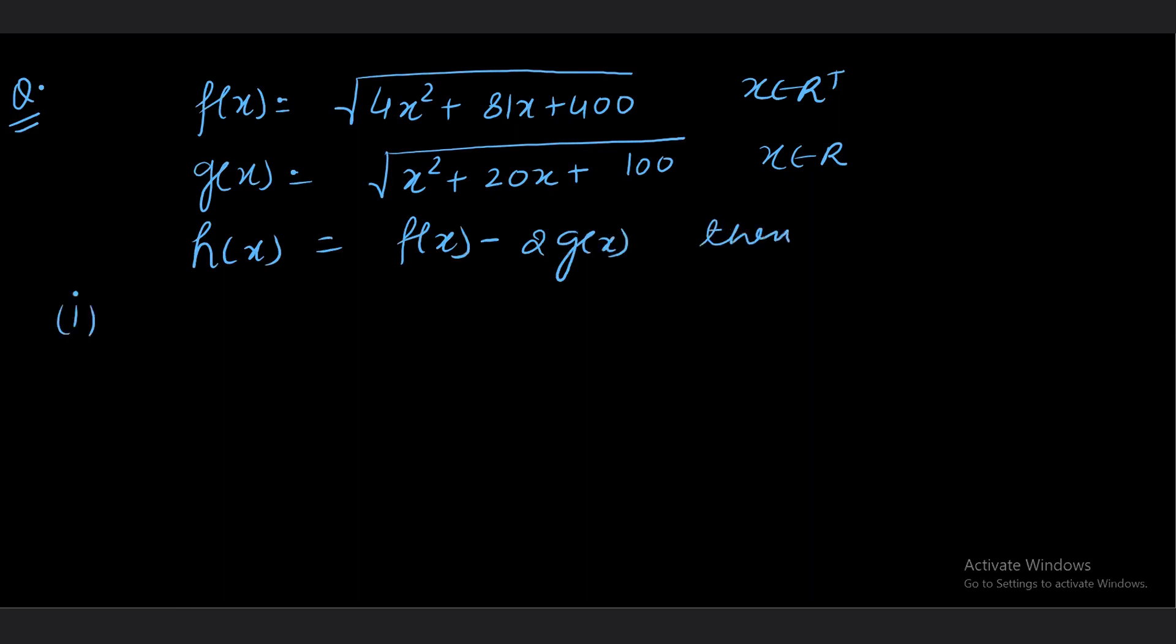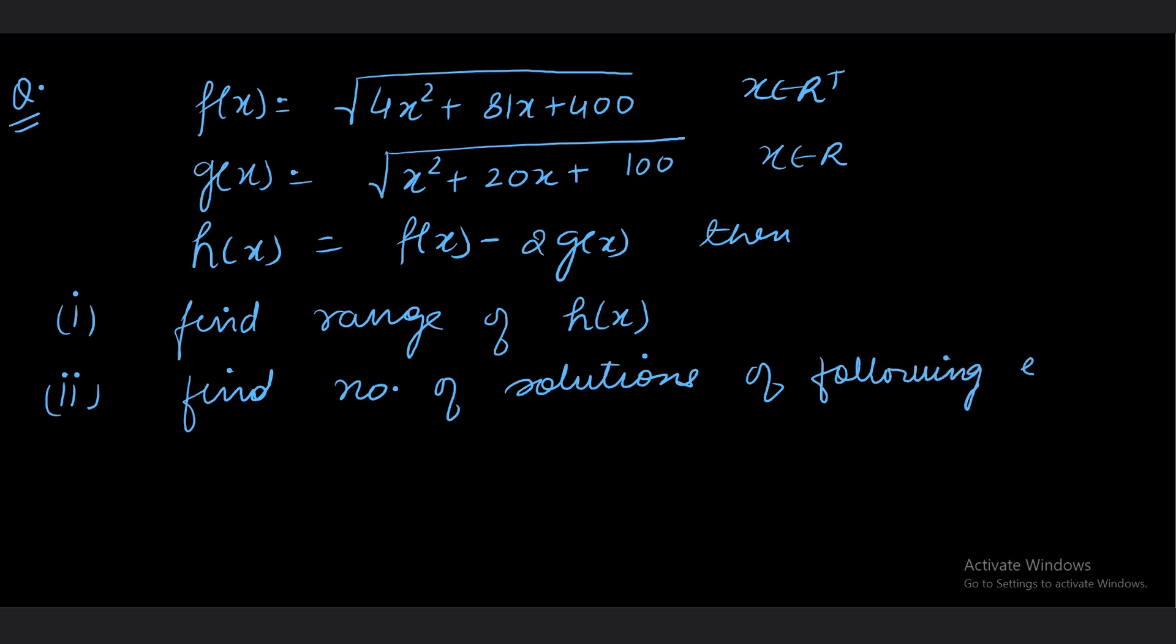Then the first part of the question says find range of h(x). That is the first part. What about the second part? The second part says find number of solutions of following equations: part A, h(x) equals 1/2; B part is h(x) equals 1/8; C part is h(x) equals 2/3. So here is the question that now we need to solve.